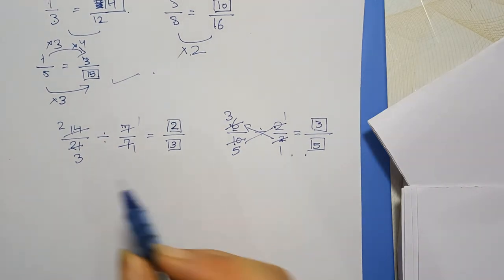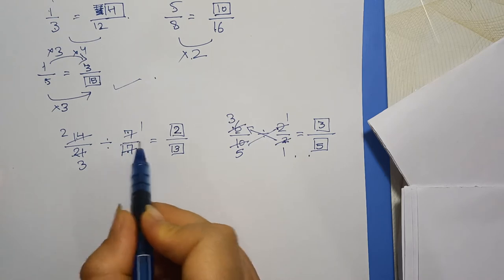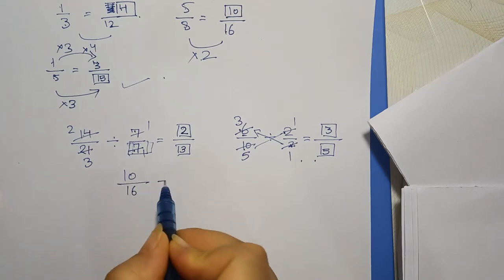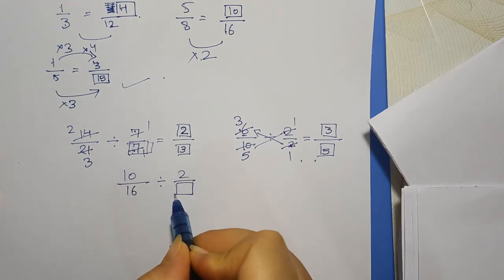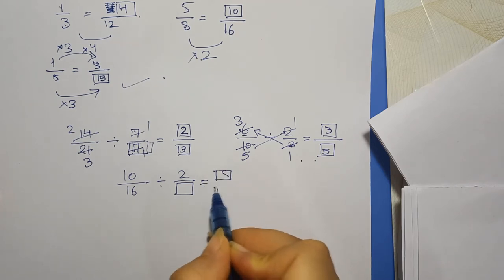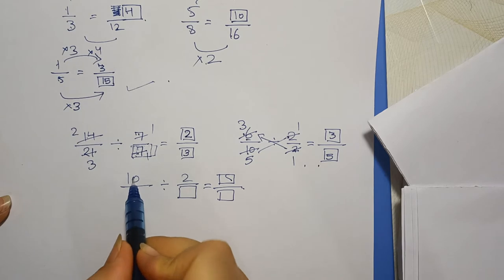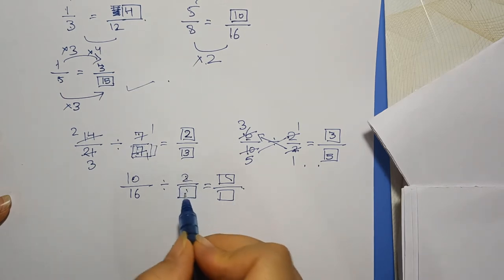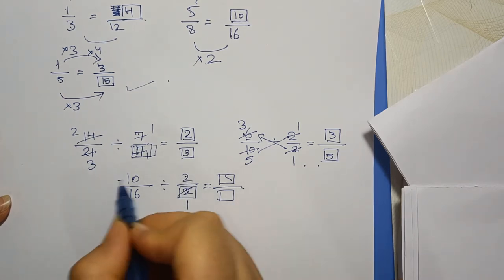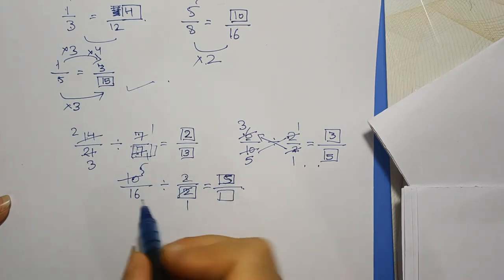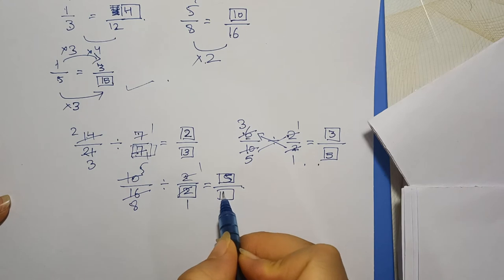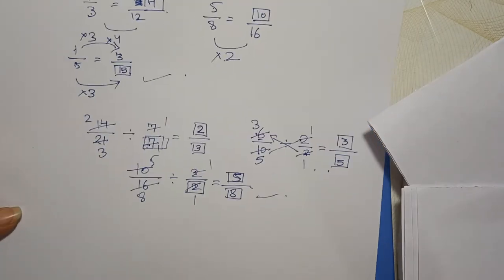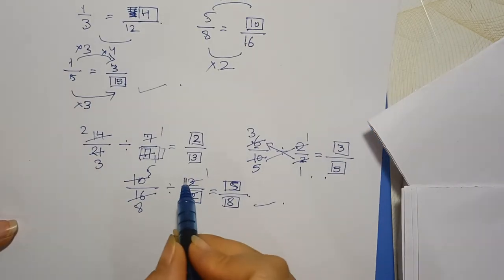Ek aur question hai jisme denominator diya hua hai, aur ek aur jisme denominator yahan nahi hai. 10 upon 16 hai, aur 2 upon blank equals blank. Equivalent fraction banane ke liye numerator aur denominator dono same hone chahiye. Yahan 2 hai toh yahan bhi 2 hoga. 2 fives are 10, toh yahan 5 aajayega. 2 eights are 16, toh denominator mein 8 aajayega. Kabhi denominator blank ho sakta hai, kabhi numerator blank ho sakta hai.